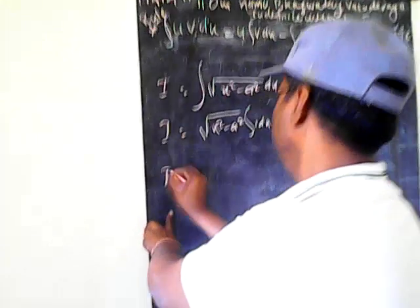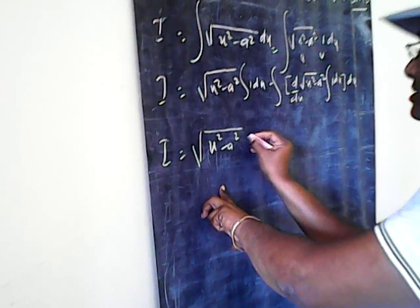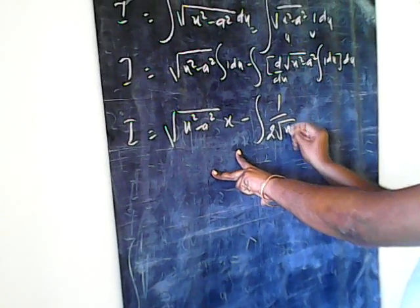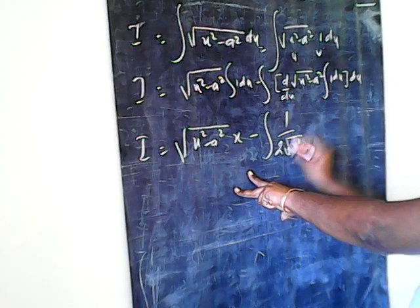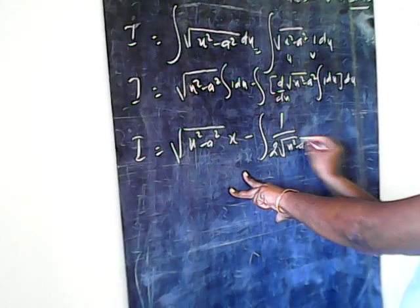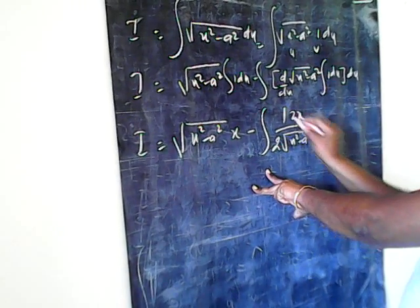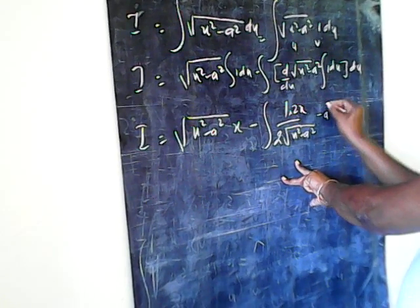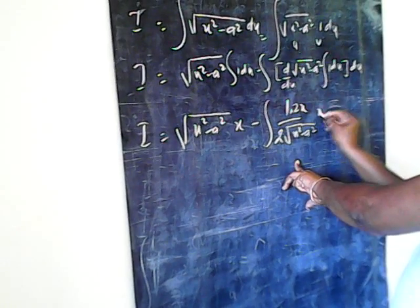Therefore I is equal to under root x square minus a square into x minus the integration of: this will be 1 upon 2 root x square minus a square. The differentiation d by dx of under root x square minus a square is equal to 1 upon 2 under root x square minus a square, and the differentiation gives 2x, then x square gives 2x minus a square into 1.